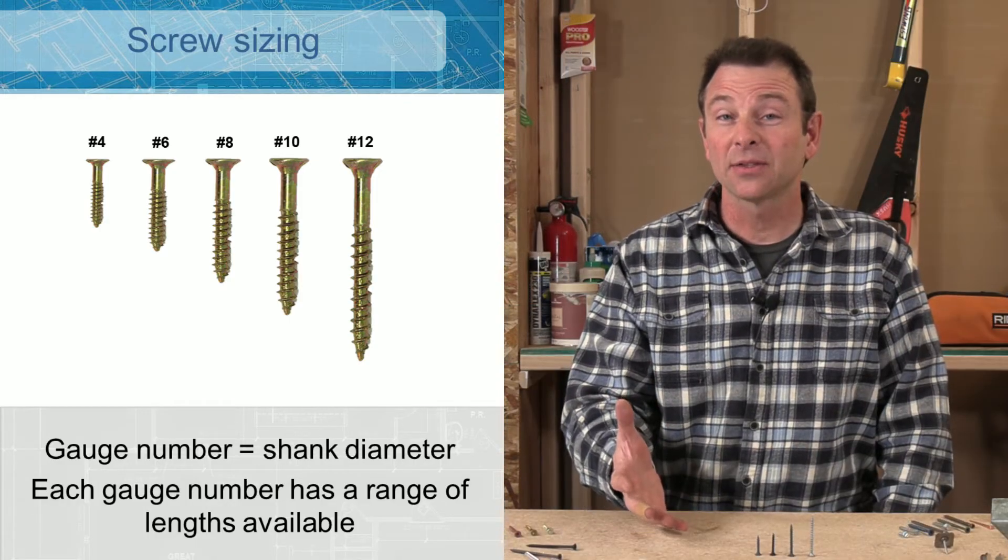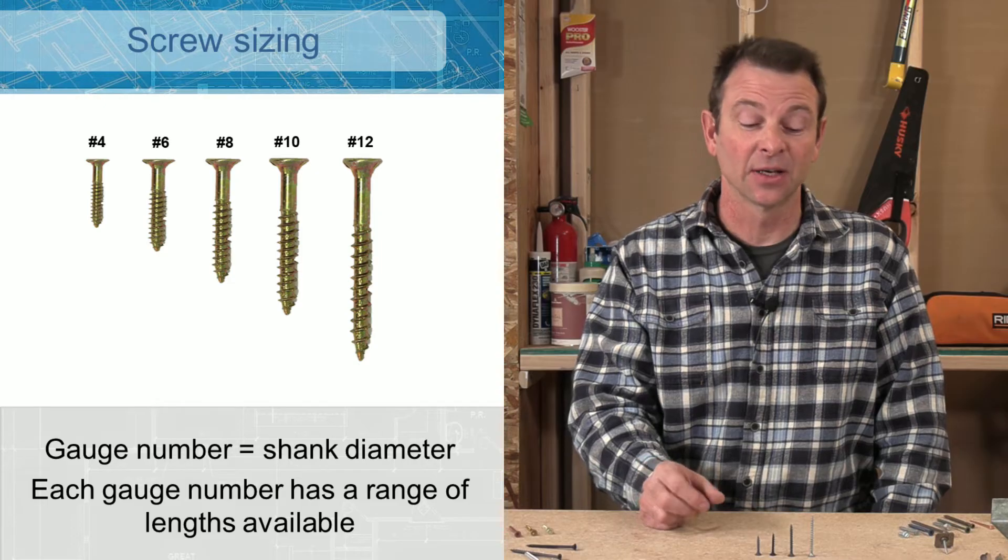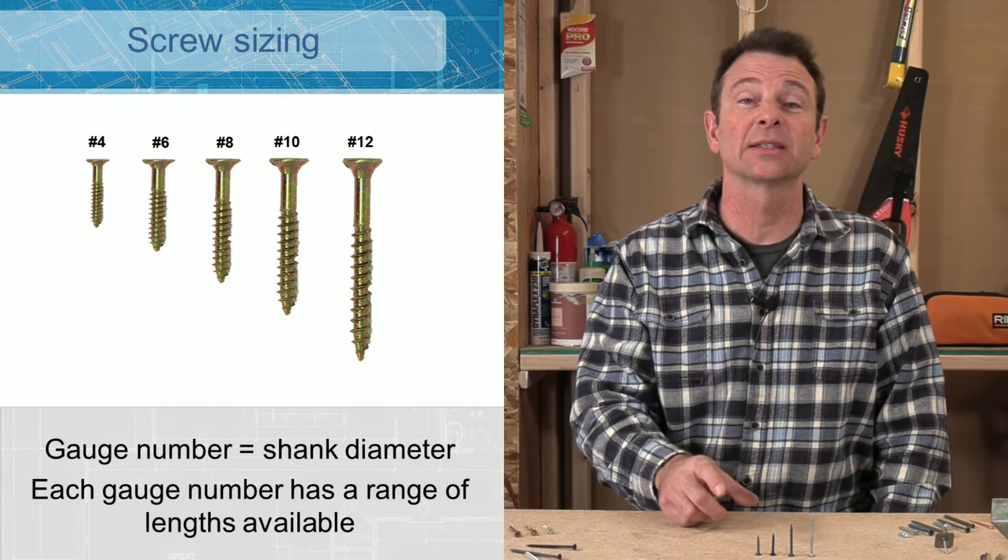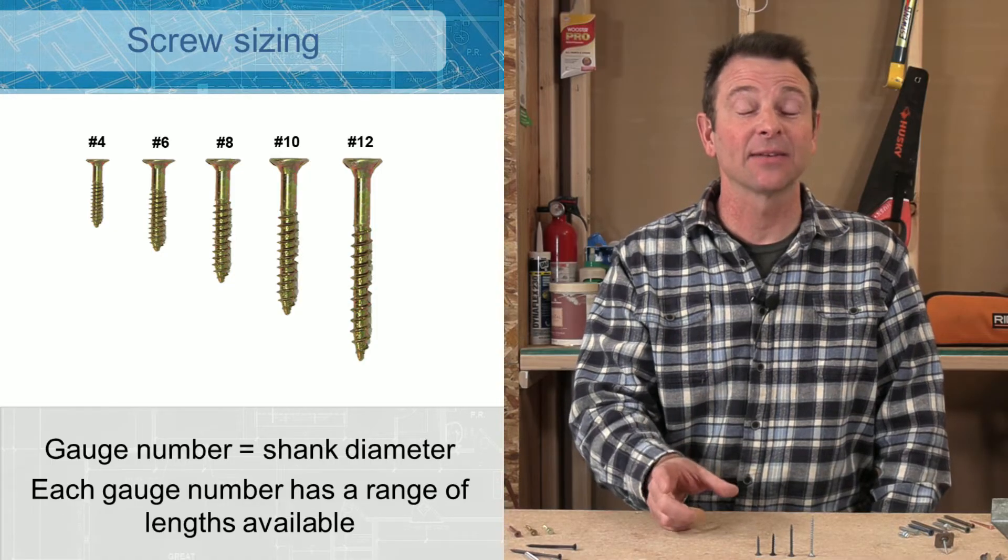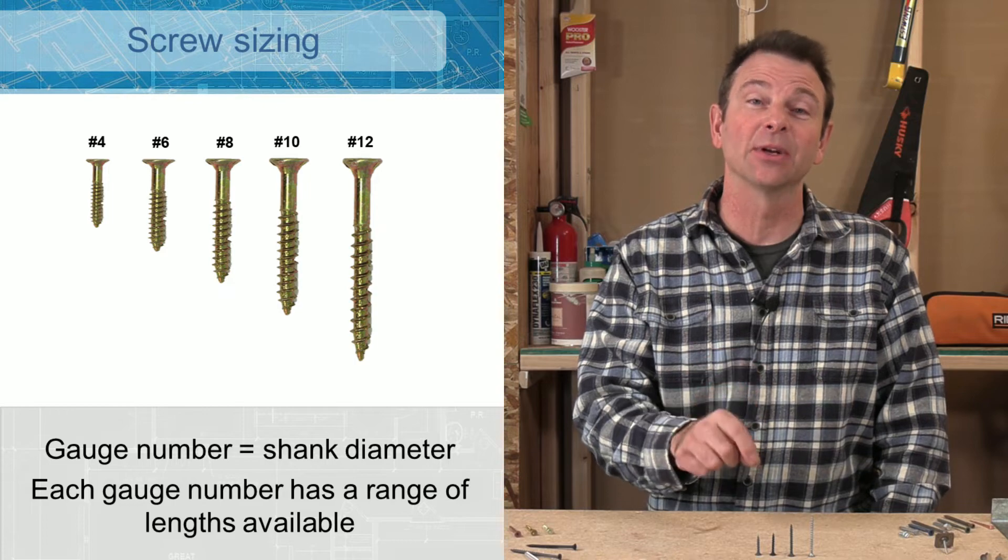When we're talking about nails, if you call out a 16D nail, we know the length of that nail. It's three and a half inches. When we call out a screw like a number 6, we then have to decide the length of that screw. That number 6 does not give us the length, only the diameter of the shank.